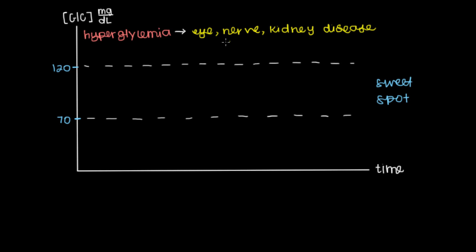And unfortunately, this is a fairly common problem because another term for eye, nerve, and kidney disease is diabetes. And in fact, if you have a person who's been fasting overnight to come in for a blood test and you notice that they have more than 126 milligrams per deciliter of glucose on two different occasions, that's grounds for diagnosis of diabetes.